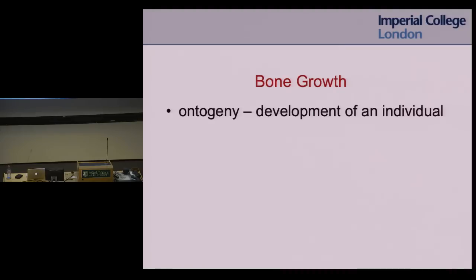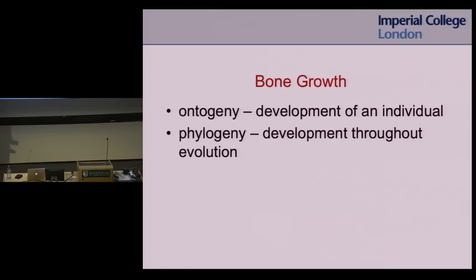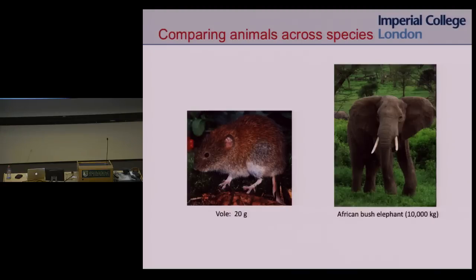I have a broader project looking at development of bone throughout evolution, called phylogeny. This project compares bone structures across species. If we look at a vole, which is one of the smallest land mammals at 20 grams, and a bush elephant, the largest land mammal at 10,000 kilograms, there's a mass difference of six orders of magnitude. But the bone tissue is the same — the only thing that differs is the way that tissue is organized.